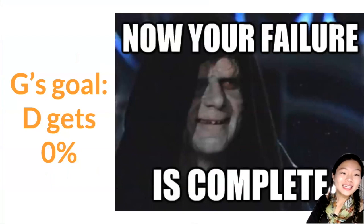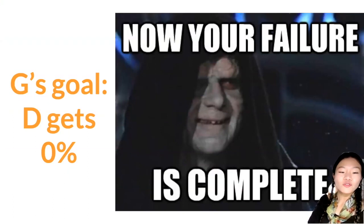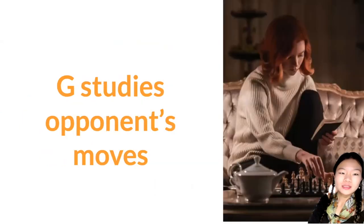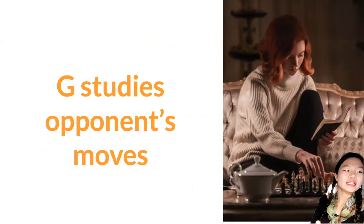Meanwhile, the generator's goal as an adversary — as an opponent — is the opposite: to get the discriminator to score 0% on that test, so it wants to fool the discriminator. The generator does that by studying the opponent's moves, by studying the discriminator's moves and understanding what the discriminator has guessed on its images. The generator produces some fake content, sees how the discriminator is answering on its test, and uses that as feedback to figure out things that might fool it.